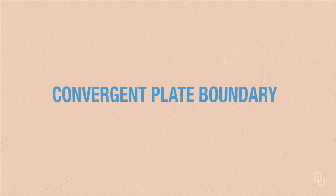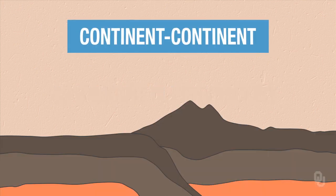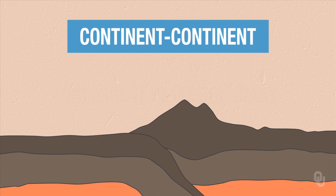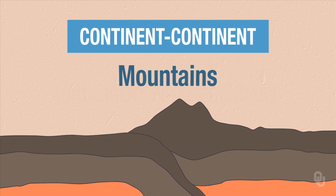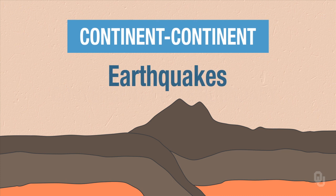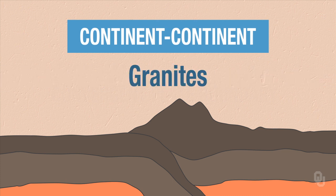Second type of plate boundary, convergent plate boundary, where plates come together. For continent-continent convergent plate boundaries, when two continents collide, you're going to get mountains, like the Himalayas. You get earthquakes, you get granites, and you get faults when the two plates come together.